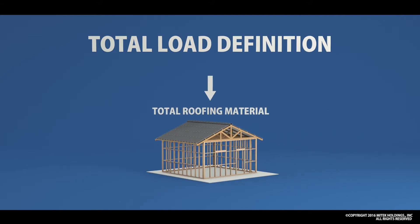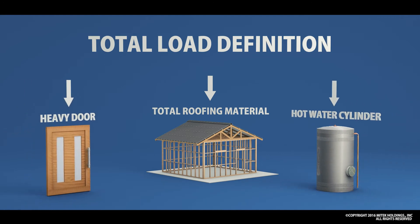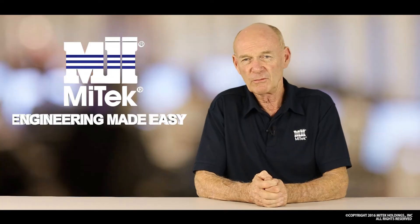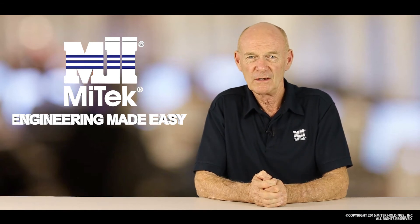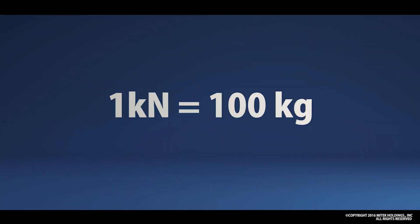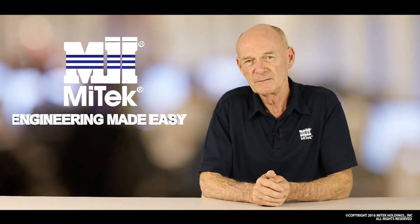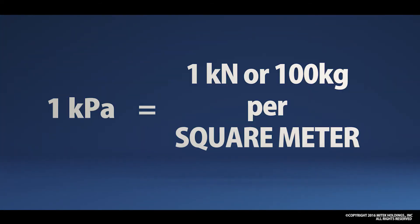So let's have a closer look at these loads. There are two main values we use. One is a total load — in other words, the physical weight of an object. Now that could be a roof weight, a hot water cylinder or maybe a heavy door. In our industry, we express these in either kilograms or kilonewtons. A kilonewton is simply 100 kilograms. The other load value we use is a load per area, and we express this as a kilopascal, which is a kilonewton or 100 kilograms per square meter.